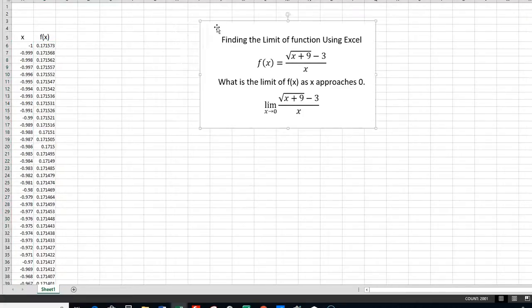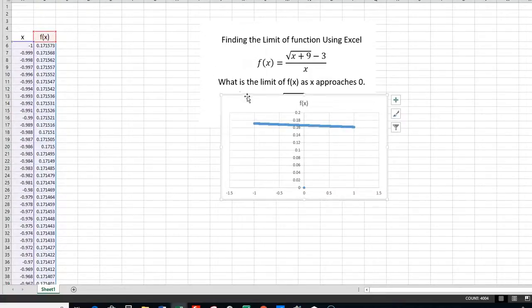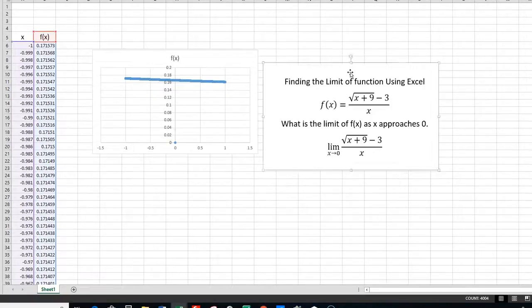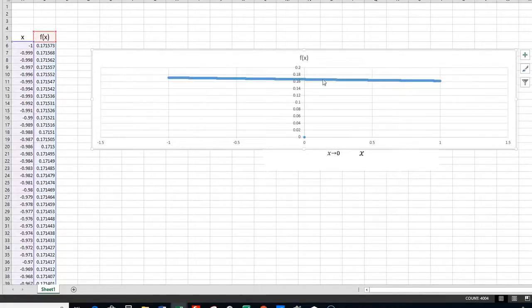Now, let's take a look at a graph of this function. Let's highlight the x and the y values, and we click Insert, and then there's our graph. And it goes from minus 1 to plus 1. You can see at 0,